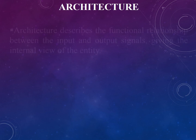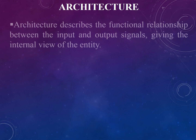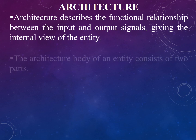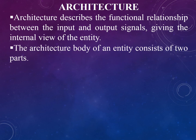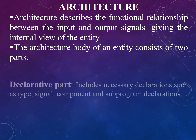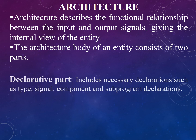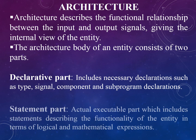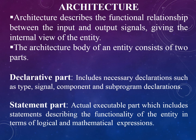The next important design unit is architecture. Architecture describes the functional relationship between the input and output signals, giving the internal view of the entity. Entity and architecture are the important design units. The architecture body of an entity consists of two parts: a declarative part and a statement part. The declarative part includes necessary declarations such as type, signal, component, and subprogram declarations. The statement part is the actual executable part, which includes statements describing the functionality of the entity in terms of logical and mathematical expressions.